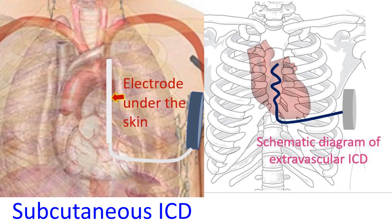The most commonly implanted ICD is also called transvenous ICD because the leads are introduced through the veins into the heart. A purely subcutaneous ICD with lead implanted subcutaneously is also available. Recently, an extravascular ICD has been tested with a substernal lead, with performance better than purely subcutaneous ICD and almost nearing the transvenous ICD.